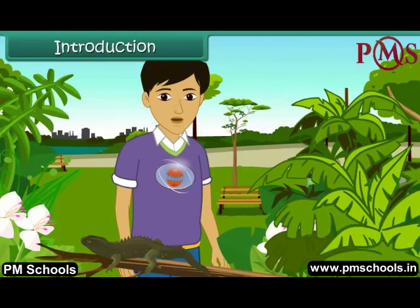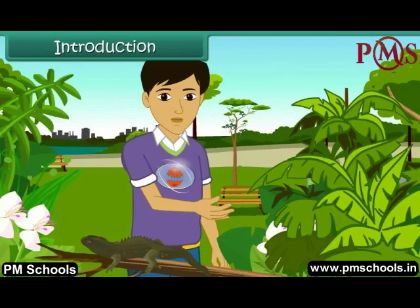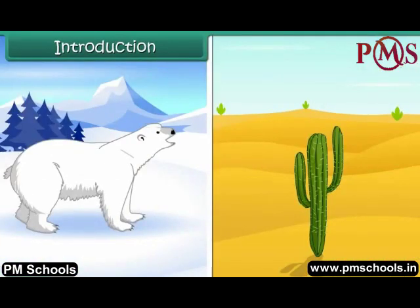It is quite essential that they adapt to their surroundings to survive. These adaptations allow animals and plants to survive and grow in a particular habitat. In this lesson, we are going to learn how different plants and animals adapt according to their habitats.